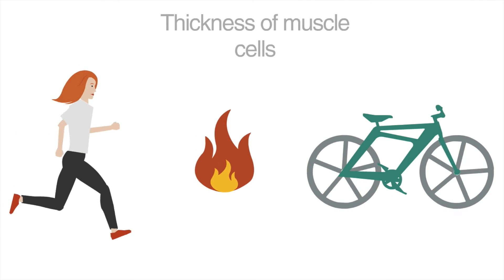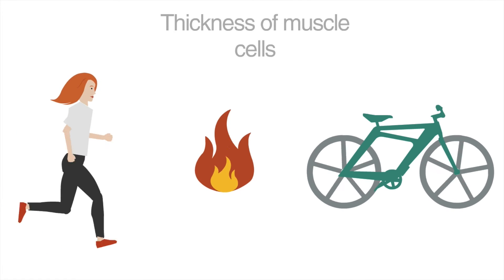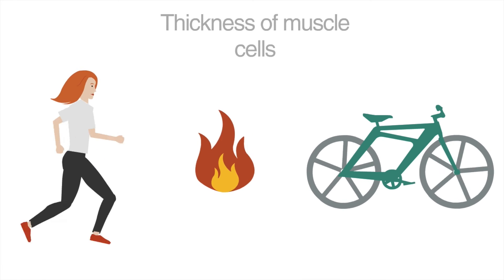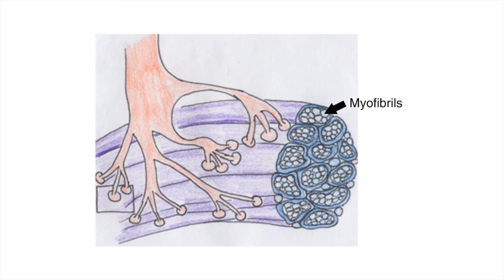We can also increase the strength of our muscles by thickening our muscle cells. This is exactly what happens when you exercise. Muscle cells are made of myofibrils, and every time we work out, we make these myofibrils a little bigger. Therefore, the thicker the myofibrils, the thicker the muscle cell, and the larger the force our muscles can produce.